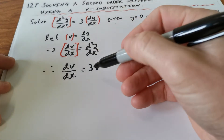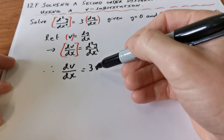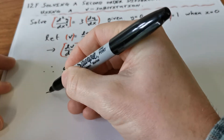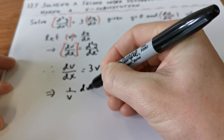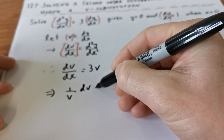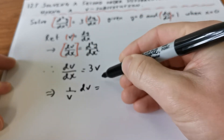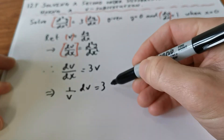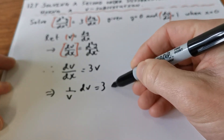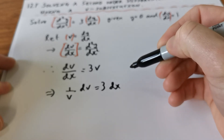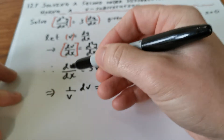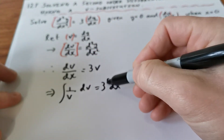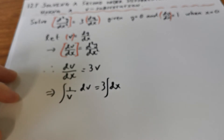The next step is to separate and then integrate. Separating: divide both sides by V and multiply by dx. On the left we get 1/V·dV, and on the right we get 3dx. So we have 1/V·dV = 3dx. All we have to do now is take the anti-derivative on both sides.